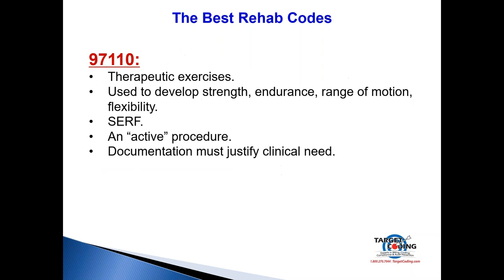The first code is 97110, therapeutic exercises. Remember the acronym SERF: Strength, Endurance, Range of motion, and Flexibility. If you're billing 97110 and trying to improve range of motion, your notes must show the patient has a lack of range of motion on intake, and your exam must show decreased range of motion. Some doctors get in trouble billing 97110, getting paid, and thinking everything is fine — then a health plan asks for notes and finds range of motion, reflexes, and muscle strength all documented as normal.